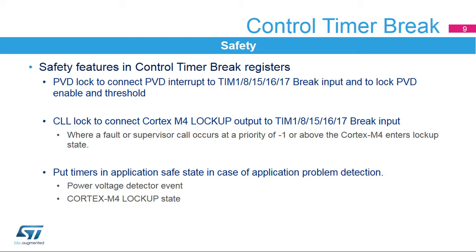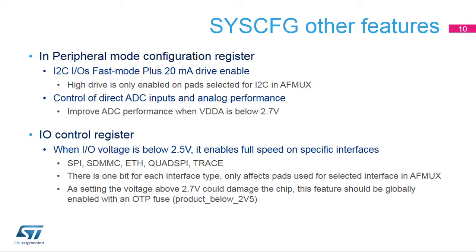These internal events are the power voltage detector event and the Cortex-M4 lock-up state. The System Configuration Controller manages the I2C I/Os fast mode plus 20mA drive-enabled control bits. This mode is only enabled on pads selected for I2C and AF MUX. There are also controls to improve ADC performance when analog supply is below 2.7 volts. The System Configuration Controller also manages specific high-speed I/Os control when the voltage is below 2.5 volts. This control is available for SPI, SDMMC, ETH, Quad SPI interfaces, and for trace pins.